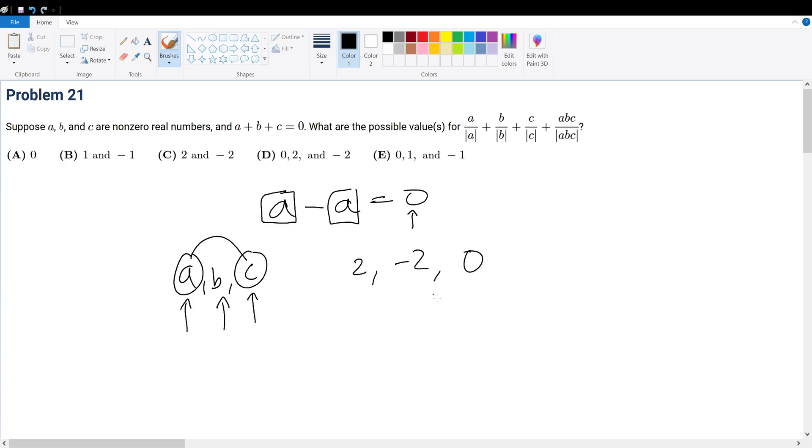But A, B, C are non-zero real numbers here. So what does that entail? That entails this equation right here. The idea is that if we have two and negative two, that means that this simplifies into one, simplifies into one, simplifies into one.